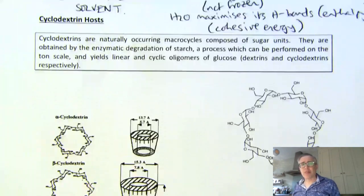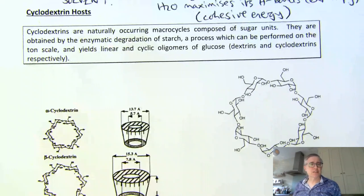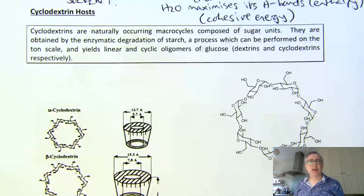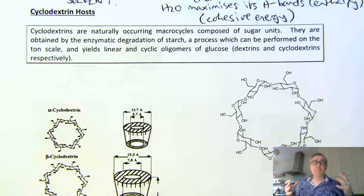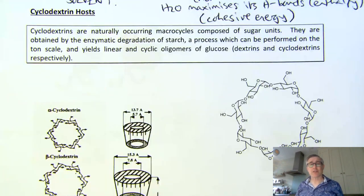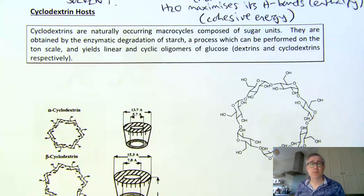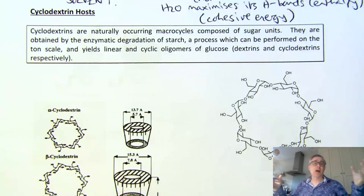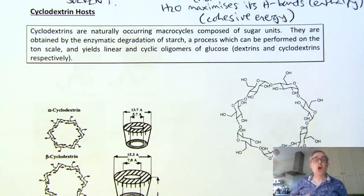Now we're going to move on and think about the most important class of hydrophobic host molecule. The reason they're important is that you can make them on massive scale, so they're industrially relevant for supramolecular chemistry. Lots of the things I've shown you are beautiful, elegant pieces of supramolecular chemistry, but the molecules are complex, big, and hard to make. You make a small amount to prove it binds really nicely, but who can use that in an industrial setting?